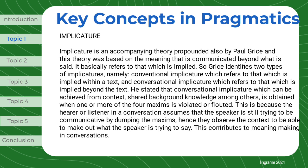Implicature. Implicature is an accompanying theory also propounded by Paul Grice, and this theory is based on meaning that is communicated beyond what is said — it basically refers to that which is implied. Grice identifies two types: conventional implicature, which refers to that which is implied within a text, and conversational implicature, which refers to that which is implied beyond the text. He stated that conversational implicature, which can be achieved from context and shared background knowledge among others, is obtained when one or more of the four maxims is violated or flouted. This is because the listener assumes the speaker is still trying to be communicative, and so they observe the context to make out what the speaker is trying to say, contributing to meaning making in conversations.